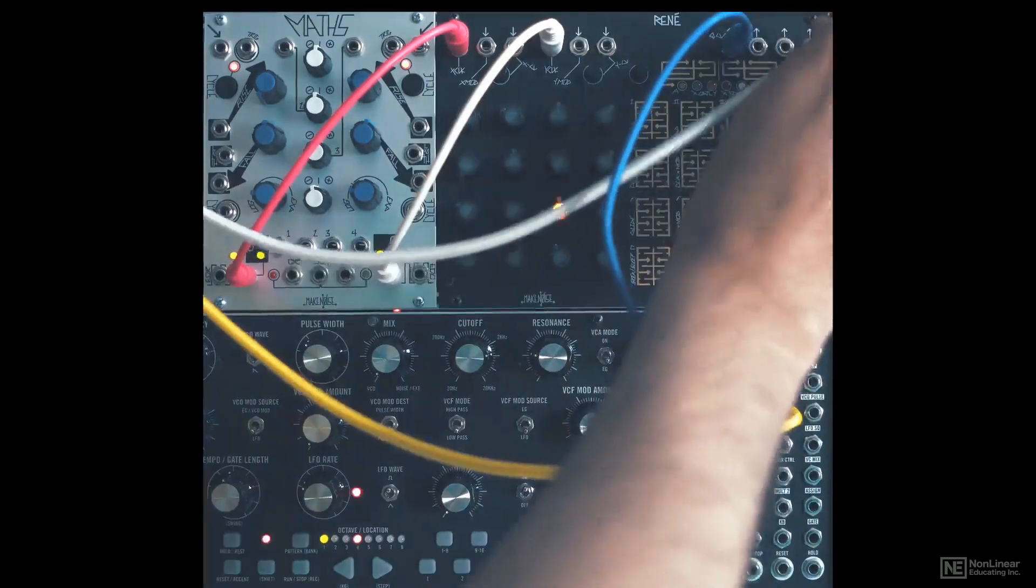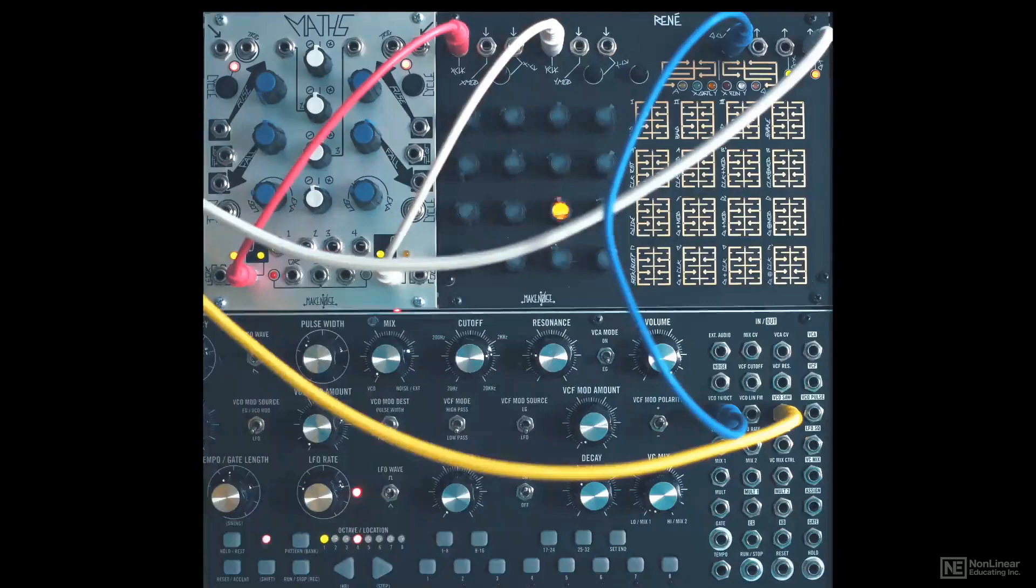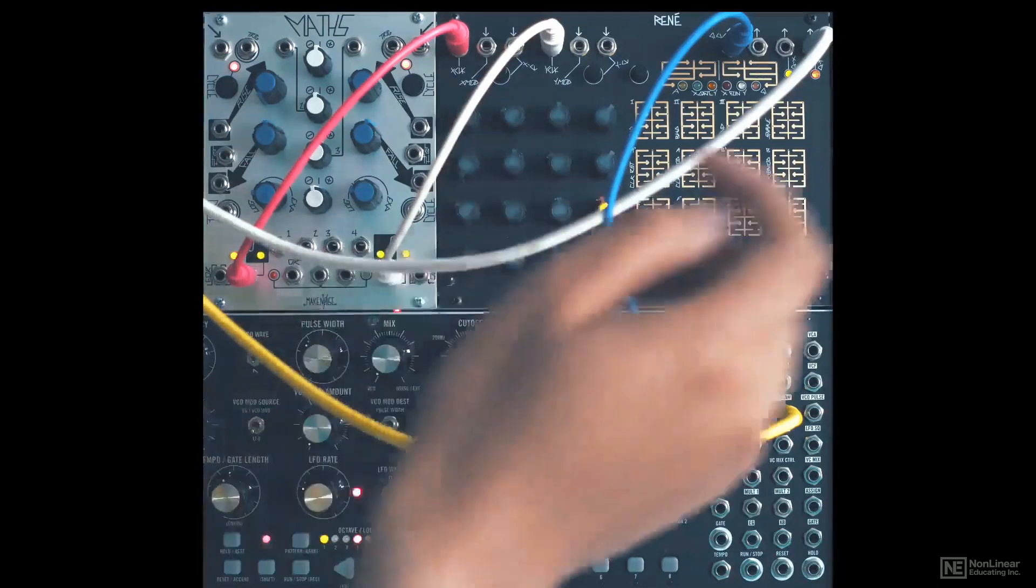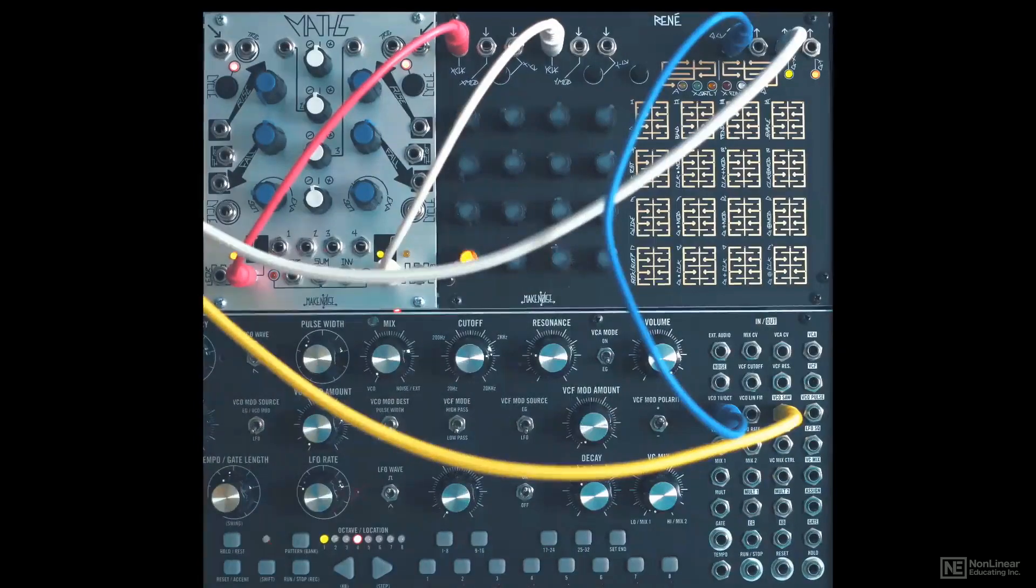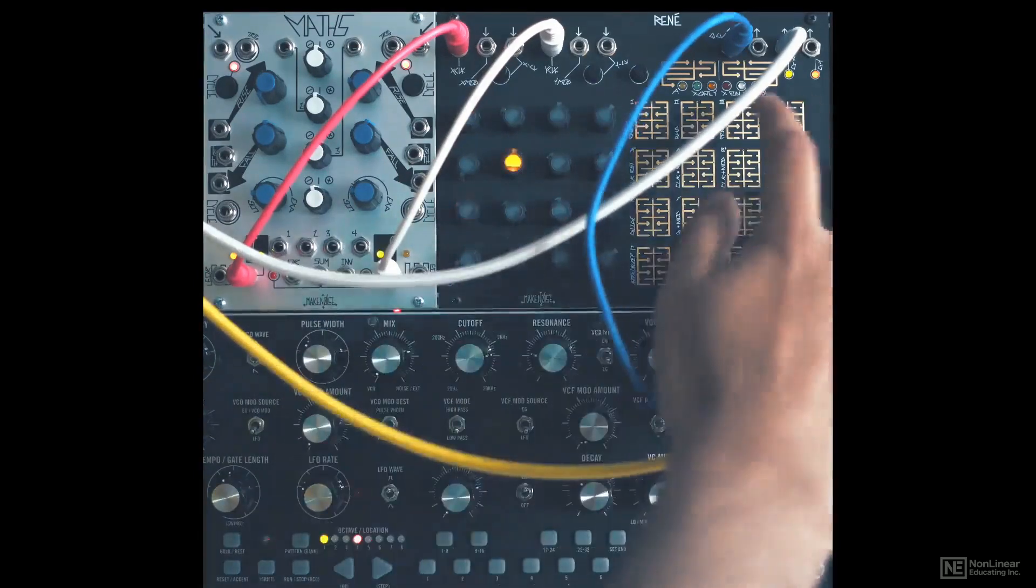Since the Y axis is also being clocked, we could also use the gate Y out. So whenever there is a shift in the Y axis, we get a gate out there. I'll just switch back to the gate X for now. Now the quantized CV is in tune, but it's completely chromatic.